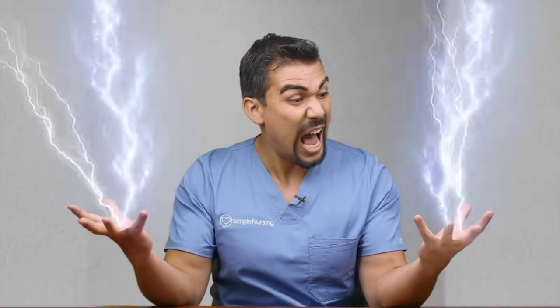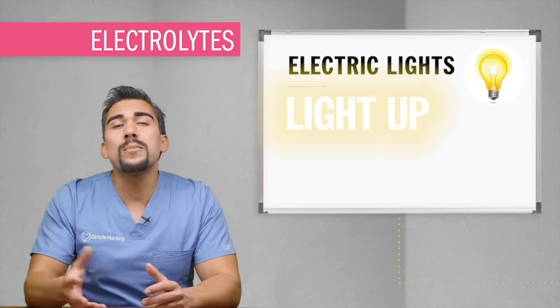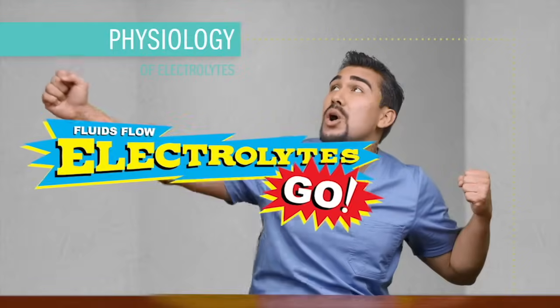Mike Linares here and welcome to SimpleNursing.com. Today we're talking about electrolytes — or as I like to call them, electric light. Electrolytes are found in the fluids and they light up your body with electric energy. I call them the underwater electric disco dance party of the body. Please remember this one token of information: where fluids flow, electrolytes go.